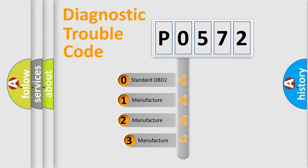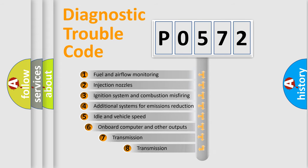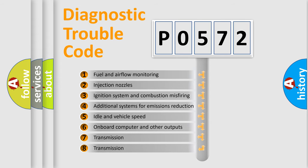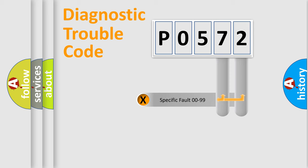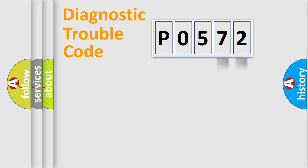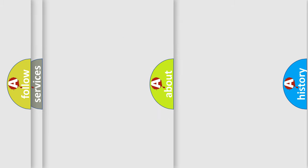If the second character is expressed as zero, it is a standardized error. In the case of numbers 1, 2, or 3, it is a more specific expression of the car-specific error. The third character specifies a subset of errors. The distribution shown is valid only for the standardized DTC code. Only the last two characters define the specific fault of the group. This division is valid only if the second character code is expressed by the number zero.